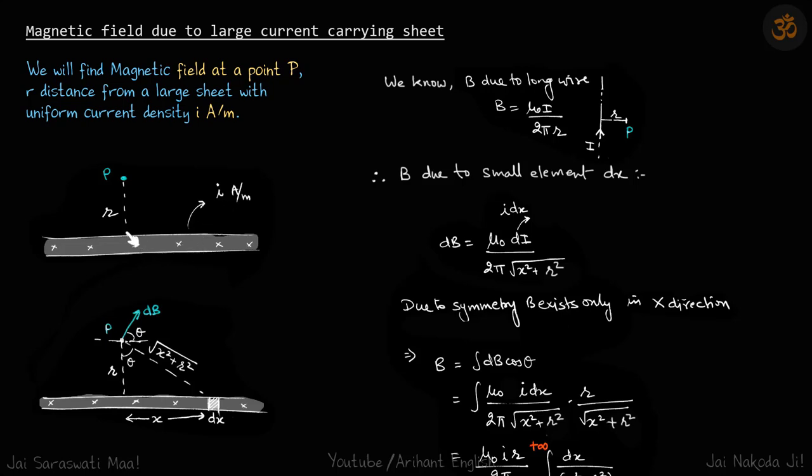What we will do is take a small element dx at a distance x. This is a wire of width dx going inside the plane. It is an infinite wire for which we know how to calculate the small field dB. We will calculate dB from this dx and then integrate to find the value of the total magnetic field.